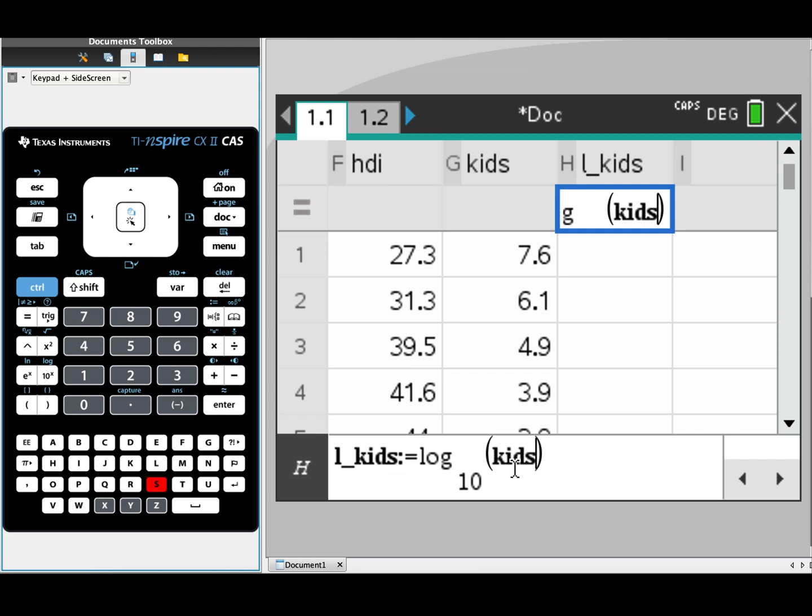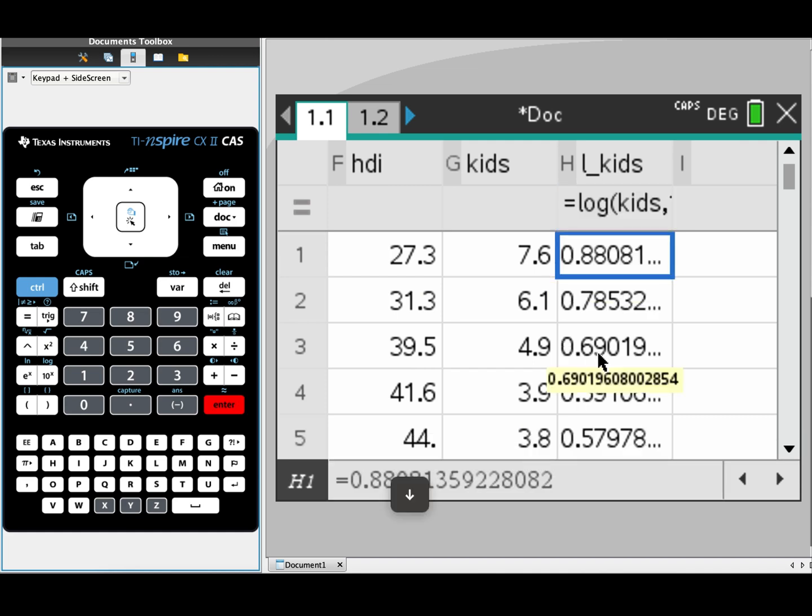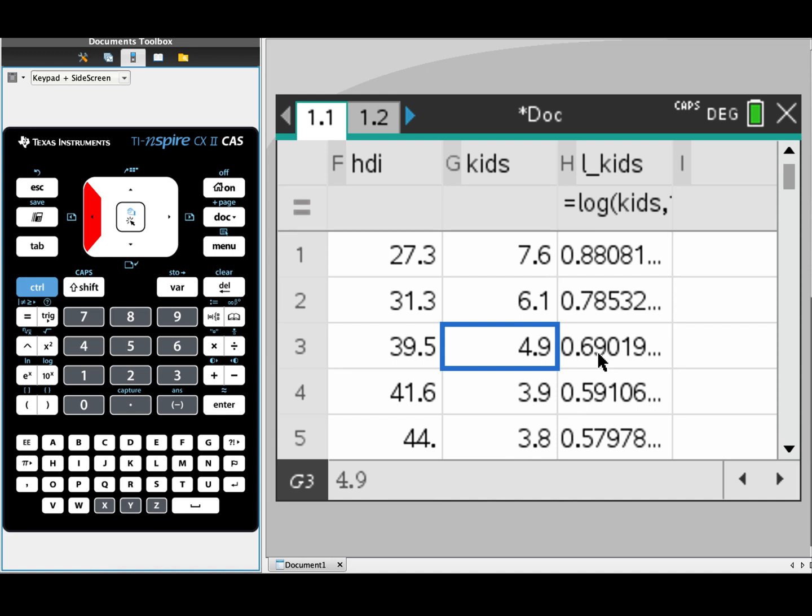Once I've typed in the function, I press enter. And you can see that the CAS has worked out for me the log value of each of those kids numbers. So the log of 4.9 is 0.6901 and so on.